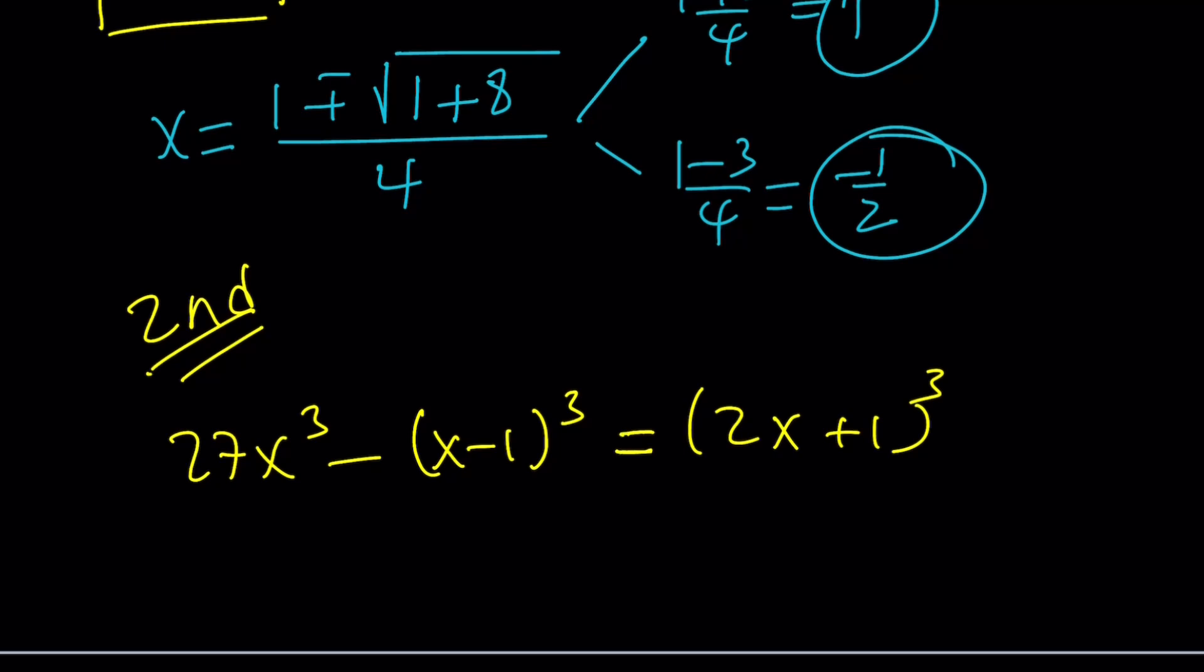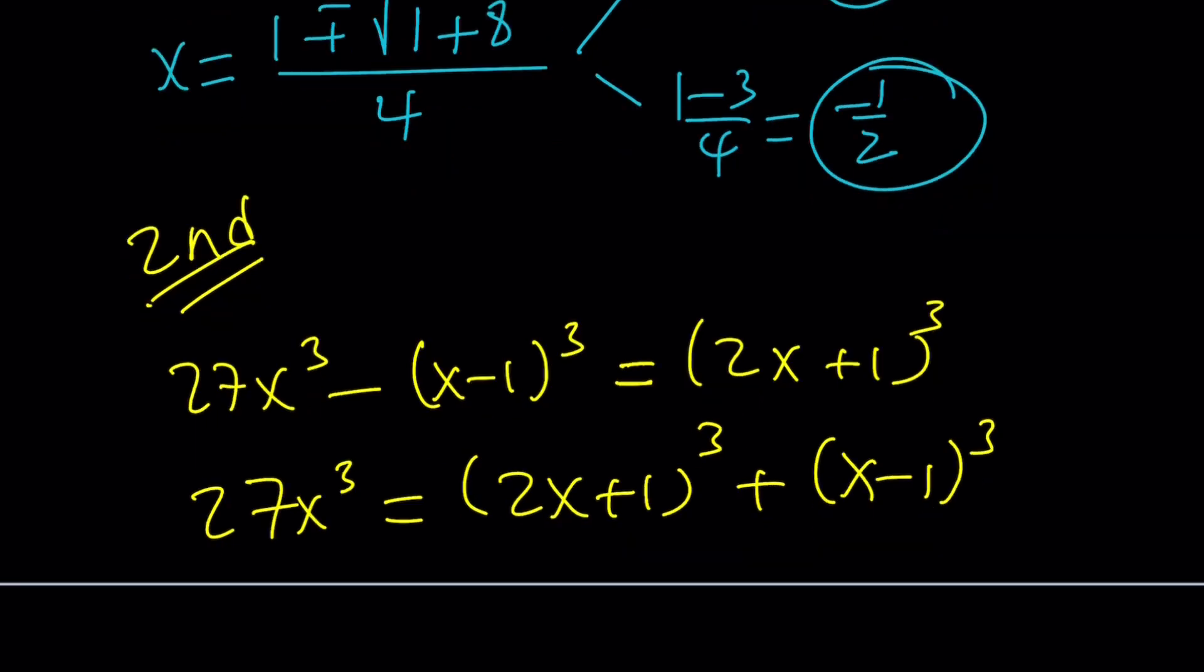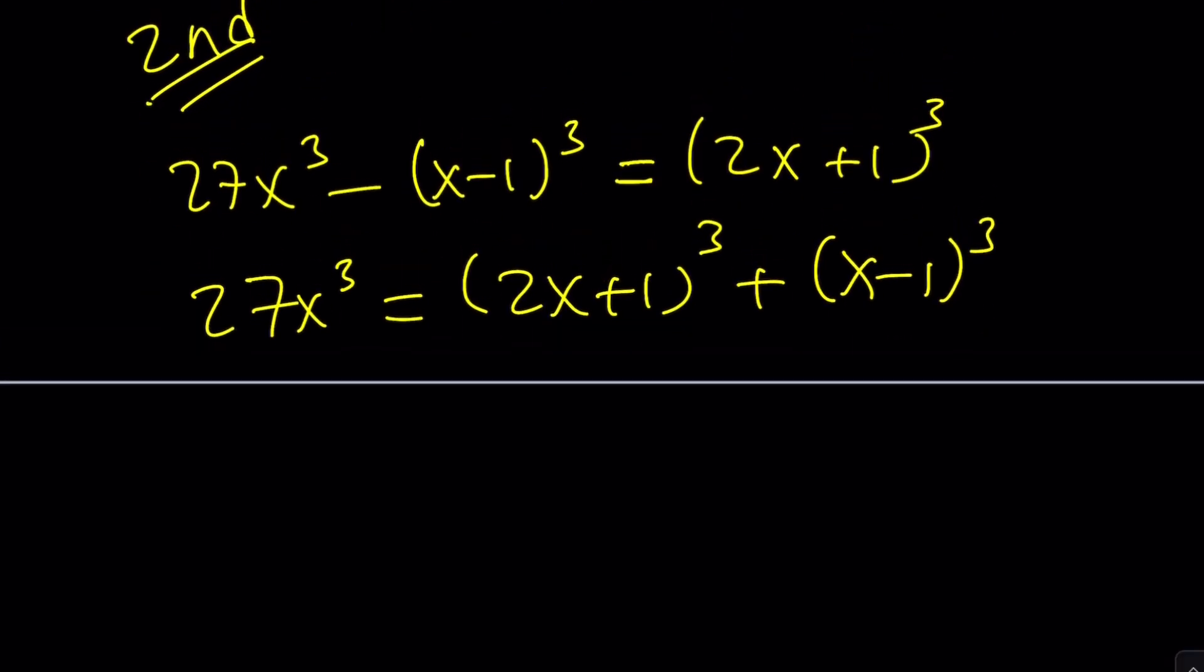So I want to go ahead and add (x minus 1) cubed to both sides. There's a good reason why I'll tell you in a little bit. But I want to put these two positive terms together. And then I want to write the 27x cubed as 3x to the third power. Since 27 is a perfect cube, we can do that.